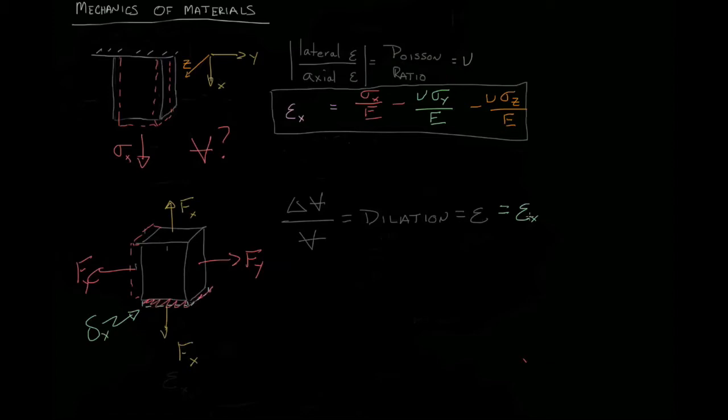So the total strain is going to be this strain, right down here, plus the strain in the y-direction. And because these strains are so much smaller than the actual length of the sides, we find them to be additive rather than multiplicative. And we end up with a simple equation for the dilation of a cube.